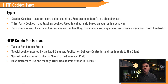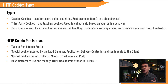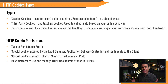HTTP Cookie Types. First, we have the Session Cookie. This is used to record your online activities since websites have no sense of memory. Without these cookies, your browsing history would always be blank. This helps you maneuver through the internet by remembering your actions. Websites would remember your activities until the cookie is expired.